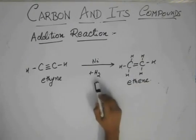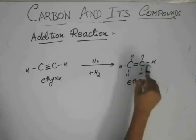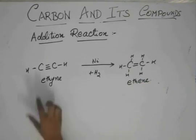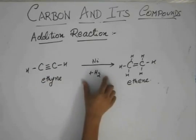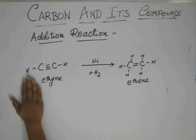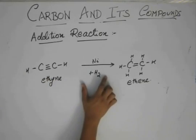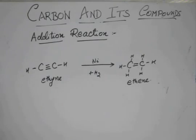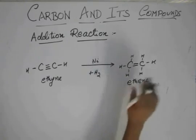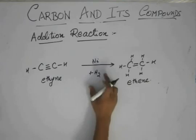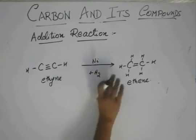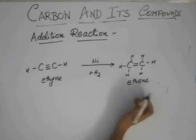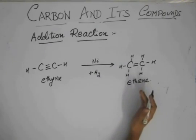This hydrogen can again add to the double bond in ethene. But we have taken only one molecule of hydrogen, and that one molecule of hydrogen is already used up to make ethene. So there is no longer any hydrogen remaining — the one molecule we had is already exhausted, and there is no hydrogen left to add further.